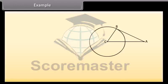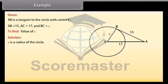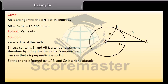Example: AB is a tangent to the circle with center C. AB is 15, AC is 17, and BC is X. We have to find the value of X. Since X is a radius of the circle and AB is a tangent segment, by the theorem of tangents X is perpendicular to AB. So the triangle formed by X, AB, and CA is a right triangle. By the Pythagorean theorem: 15² + X² = 17², so X² = 289 − 225 = 64, which gives X = 8.